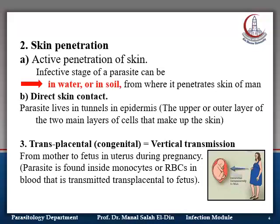Third is through transplacental or congenital transmission, what is known as vertical transmission. This occurs transplacentally from the mother to her fetus inside the uterus during pregnancy, where the parasite is present either inside monocytes or inside RBCs in blood, and they are transmitted transplacentally to the fetus.